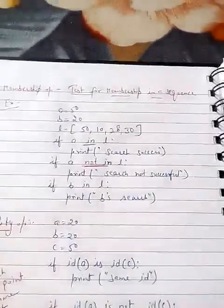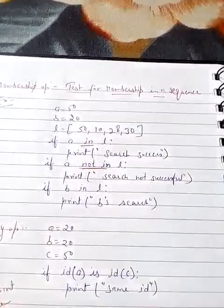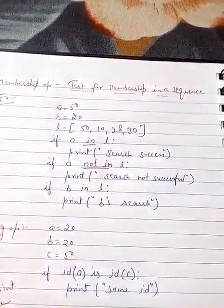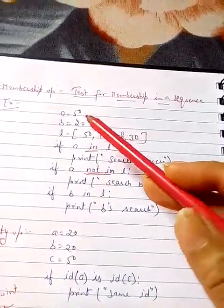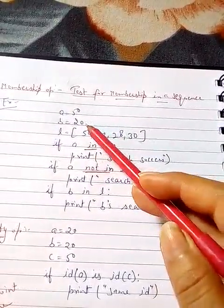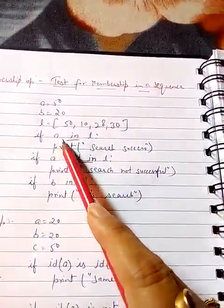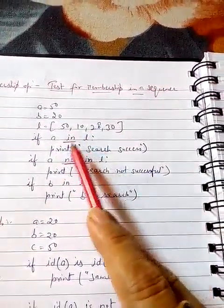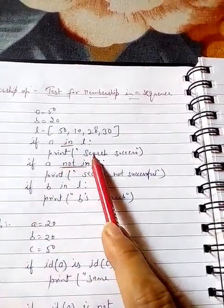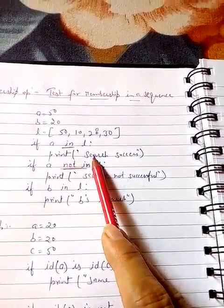Now discuss membership operator here. This operator is used for testing or searching any element in a particular sequence. Let's take an example. Here I am taking a is equal to 50 and b is equal to 20. L I am taking as a list and here are four elements. So we search a in the list. A be fine here. So this print statement will be executed otherwise it will be skipped.